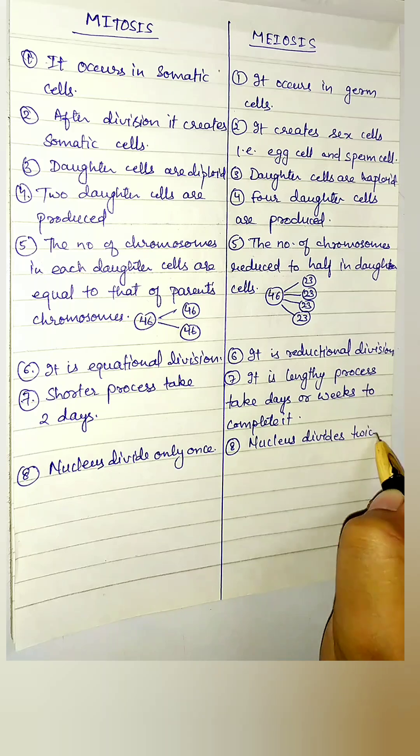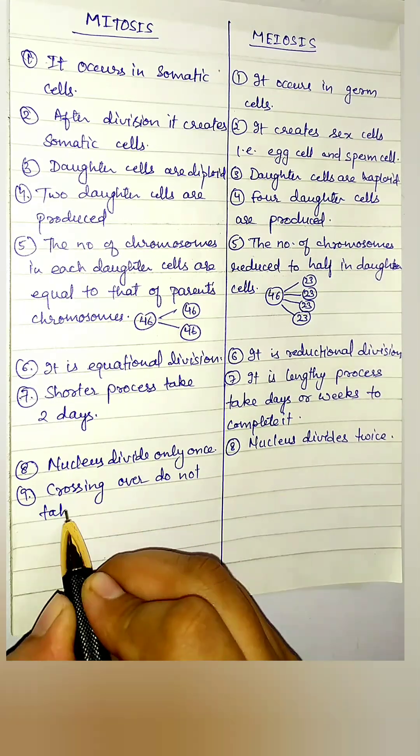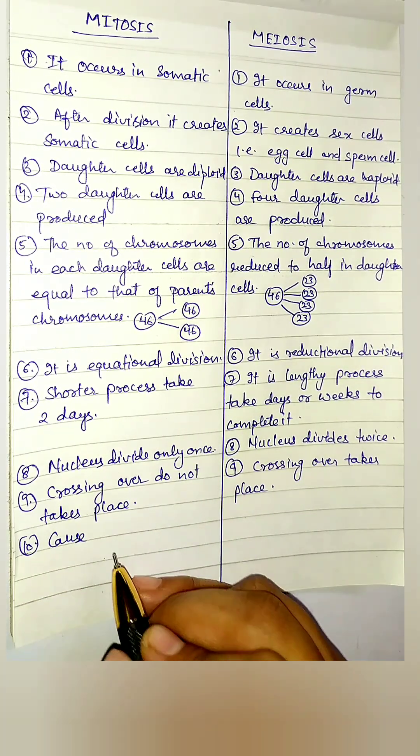Nucleus divides only once in mitosis and nucleus divides twice in meiosis. Crossing over does not take place in mitosis and crossing over takes place in meiosis.